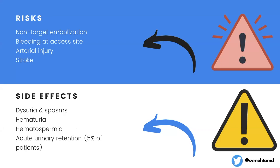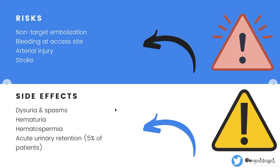The usual risks of arteriography also apply: bleeding, arterial injury, and stroke if using a radial approach. I then discuss side effects — things I expect to occur. You're going to have dysuria, potentially hematuria which usually clears, and for about 5% of patients you may go into acute urinary retention. I simply explain that it's because the prostate swells before it shrinks, so we may need to place a catheter.